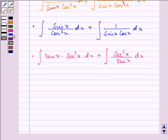Now let t be equal to tan x. So dt will be equal to secant square x into dx.